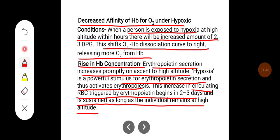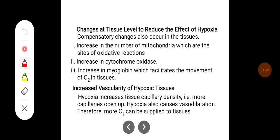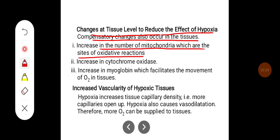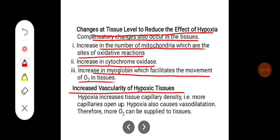Fourth, changes at the tissue level to reduce the effect of hypoxia. Compensatory changes also occur in the tissues. There will be an increase in the number of mitochondria, which are the sites of oxidative reactions. There will be an increase in cytochrome oxidase and an increase in myoglobin, which facilitates the movement of oxygen in the tissues.